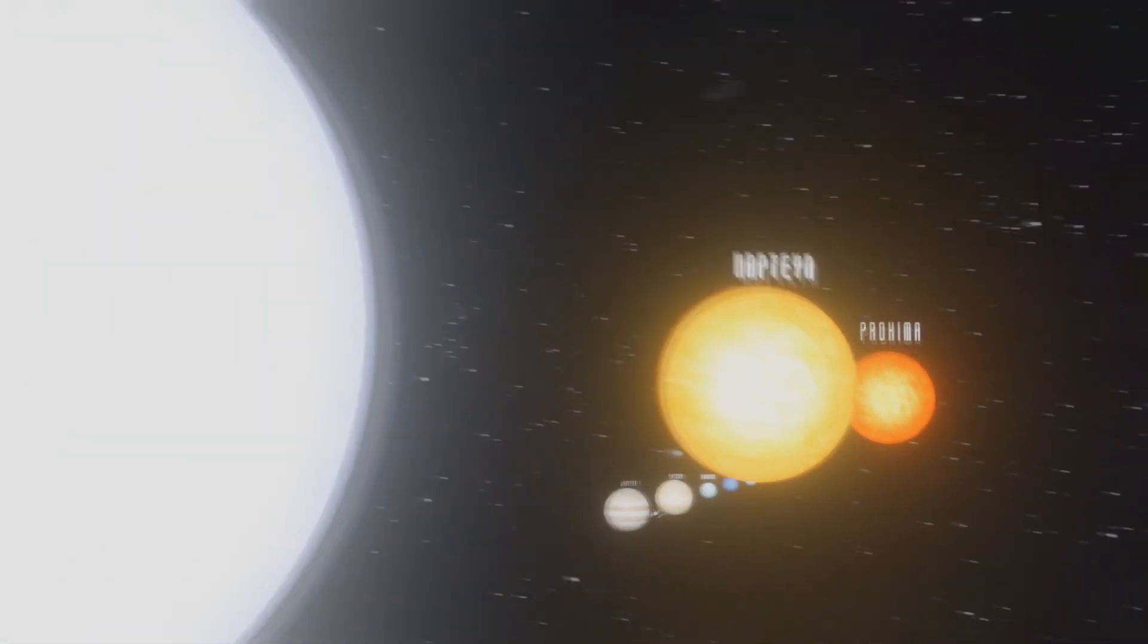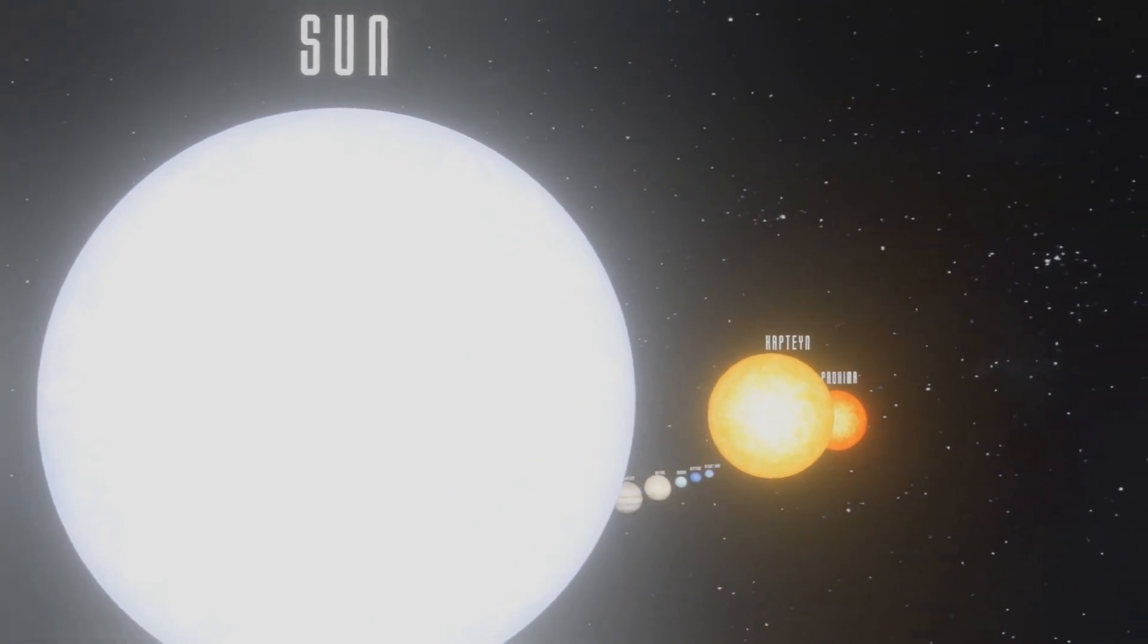Our closest star, the Sun, is known as the Yellow Dwarf, but has a volume of over 1,000,000 Earths.